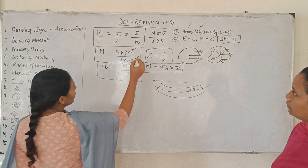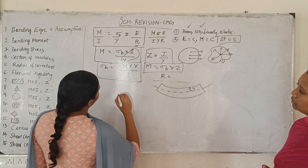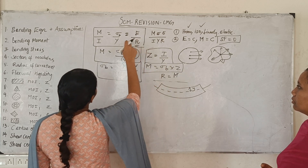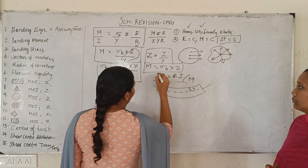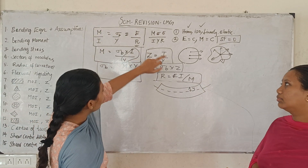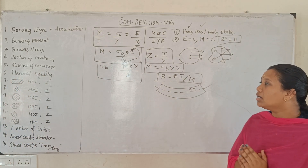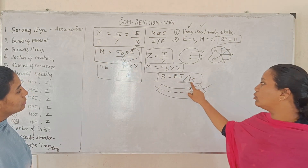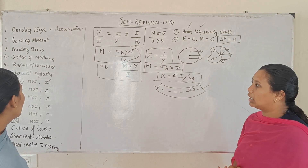Next is radius of curvature. R is equal to E·I divided by M, so R equals E·I by M. Radius of curvature is from the first and last terms of the bending equation: R equals E·I divided by M. E·I is the flexural rigidity.